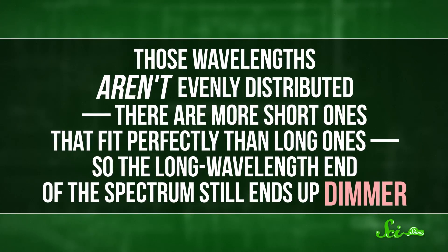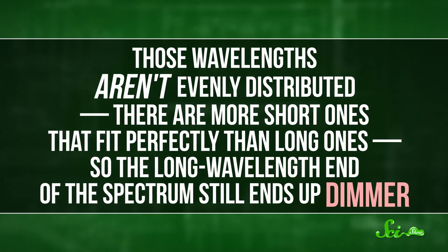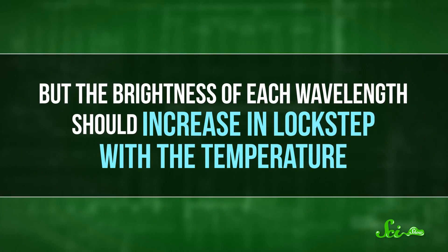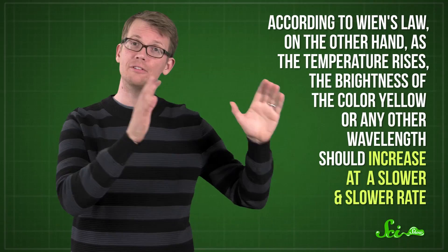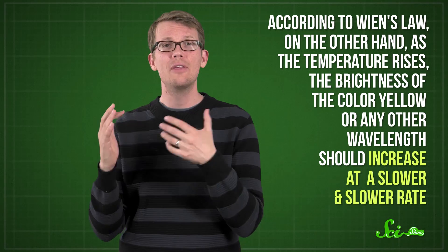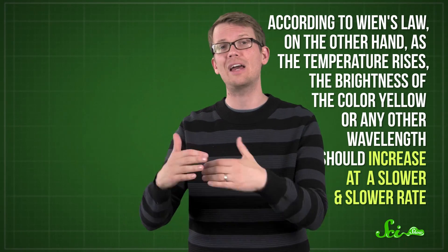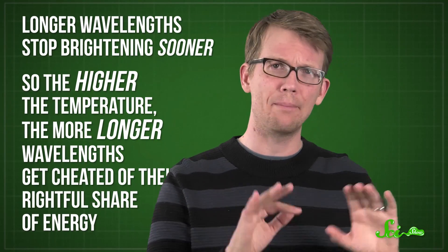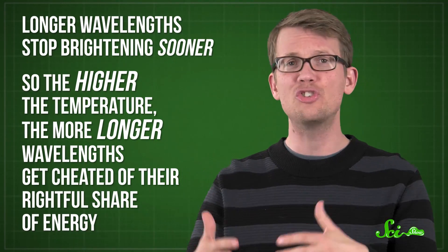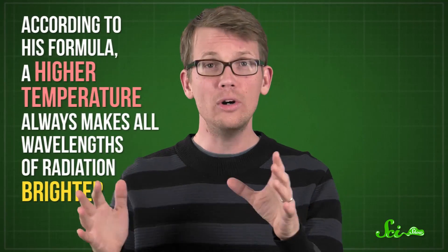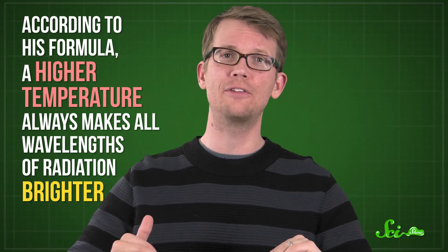He showed that, according to Equipartition, each wavelength where the waves fit perfectly between the walls of an oven should get an equal share of energy. Those wavelengths aren't evenly distributed. There are more short ones that fit perfectly than long ones. So the long wavelength end of the spectrum still ends up dimmer. But the brightness of each wavelength should increase in lockstep with the temperature. According to Wien's law, on the other hand, as the temperature rises, the brightness of the color yellow or any other wavelength should increase at a slower and slower rate. And longer wavelengths stop brightening sooner. So the higher the temperature, the more longer wavelengths get cheated of their rightful share of the energy. Rayleigh didn't think the laws of physics would shortchange longer wavelengths like that. And as those precision measurements showed, he was right. Instead, Rayleigh suggested a different formula based directly on Equipartition. According to his formula, a higher temperature always makes all wavelengths of radiation brighter. Rayleigh's proposal, now known as the Rayleigh-Jeans law, fit perfectly in exactly the part of the spectrum where Wien's law failed.